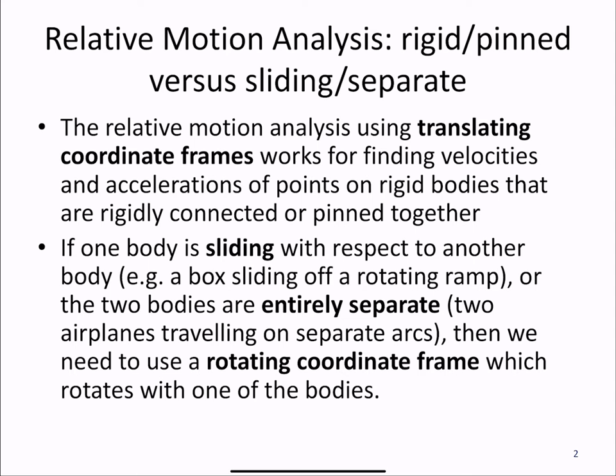If one body is sliding with respect to another, or if the two bodies are entirely separate, such as two airplanes traveling on separate arcs, then we need to use a rotating coordinate frame which rotates with one of the bodies rather than the original translating coordinate frame.